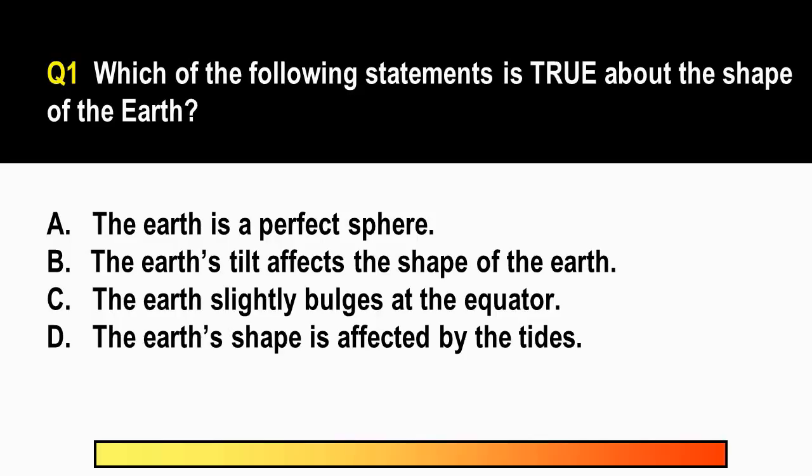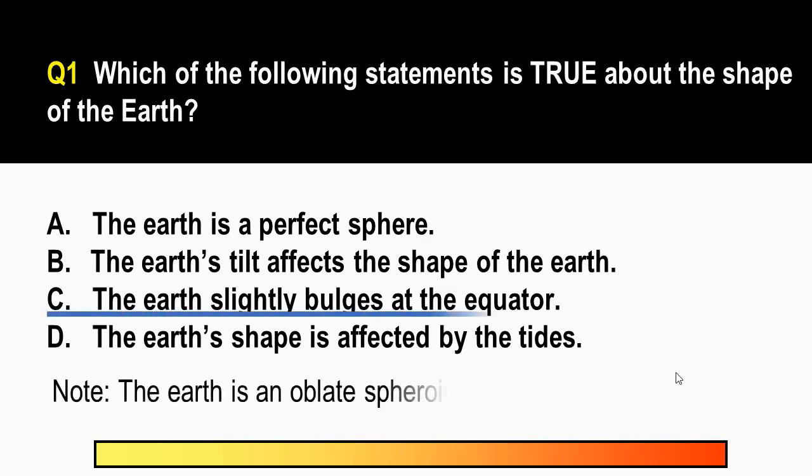The correct answer is letter C. Remember that the earth slightly bulges at the equator and is actually flattened or squashed at the poles. The shape of this is oblate spheroid. This means that the shape of the earth is not a perfect sphere, so letter A is incorrect. And letter B, the earth's tilt does not really affect the shape of the earth. It's the rotation of the earth which causes the equator to somehow bulge. And also the earth's shape is not affected by the tides.